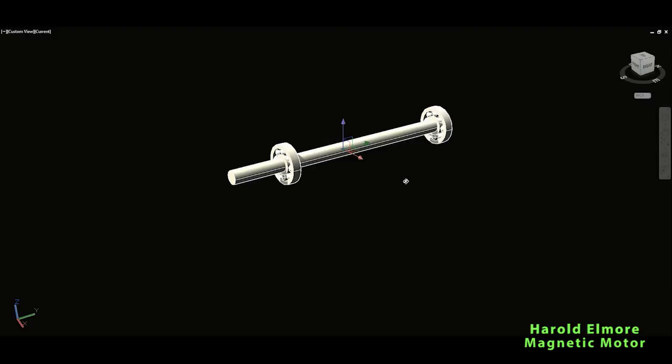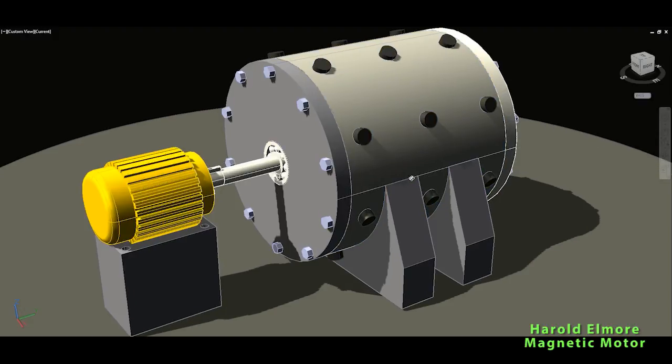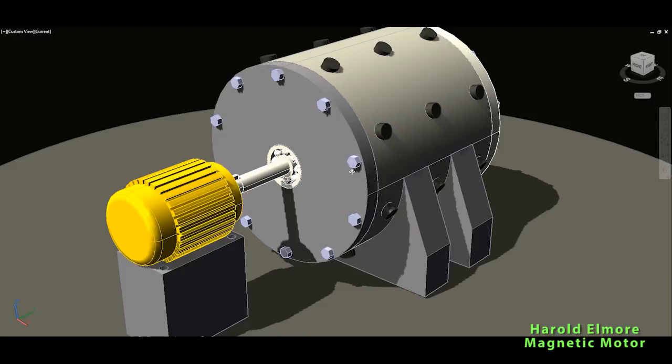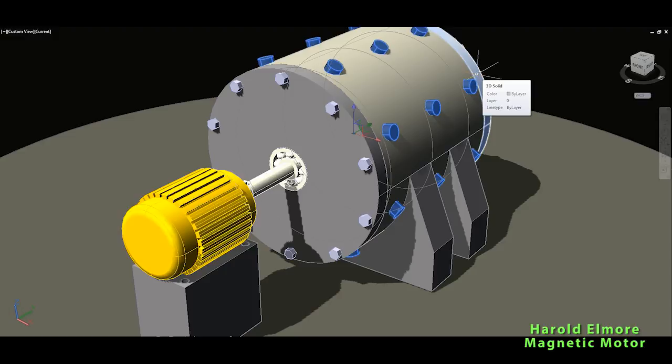So the rotor will spin on this shaft and of course now we will explore what's on the rotor and stator. As you can see now the strange situation is that these are of course the magnets.